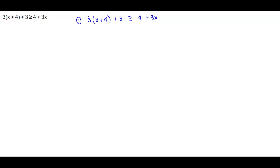So the first thing we're going to do is distribute the 3 and proceed as if we were solving an equation. So we have 3 times x, which is 3x, 3 times 4, which is plus 12, plus 3. And that's greater than or equal to 4 plus 3x.